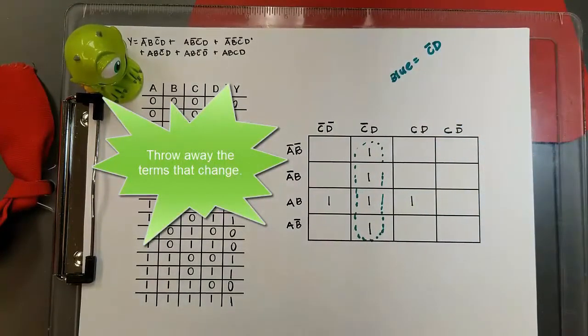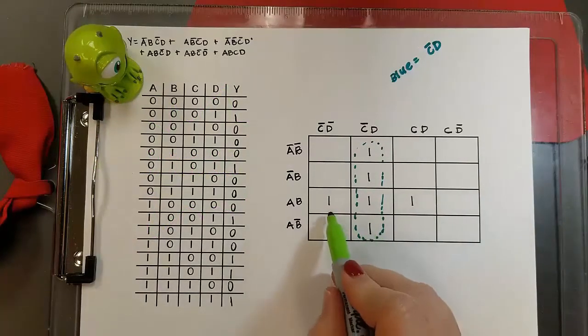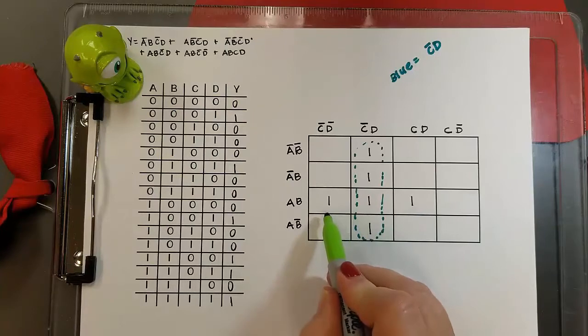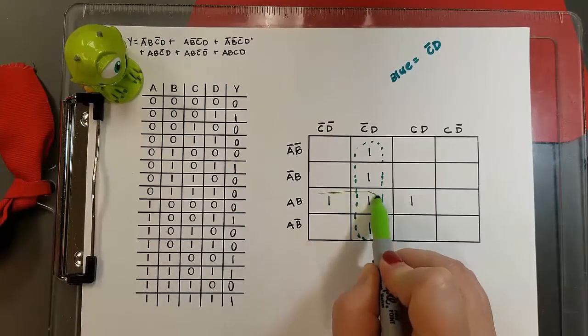So the term I get from that group of four is not C D. Now I have a group of three, but I can't make groups of threes. I can make groups of twos, fours, eights, or sixteen.